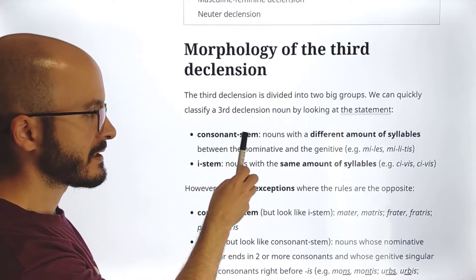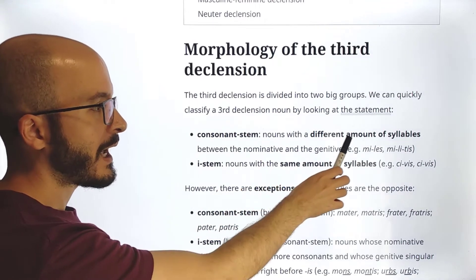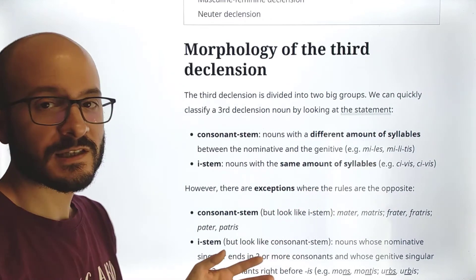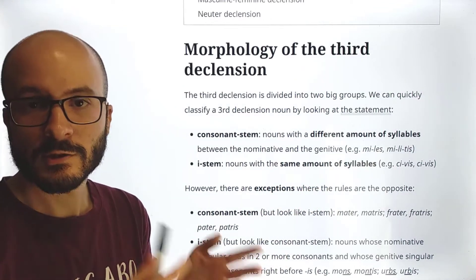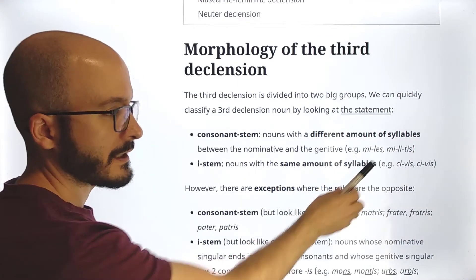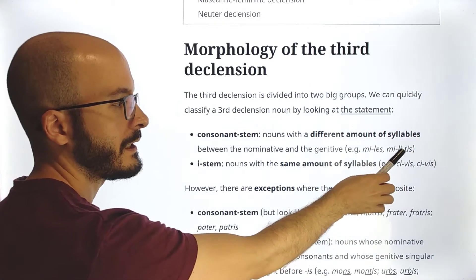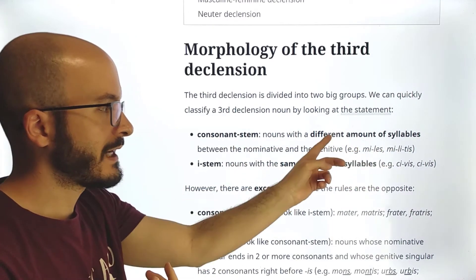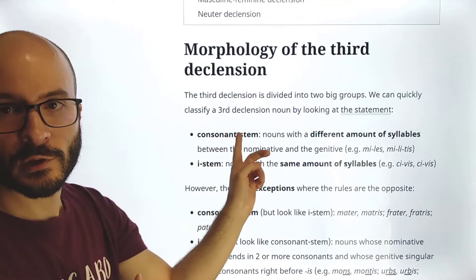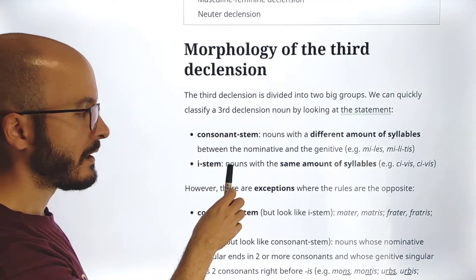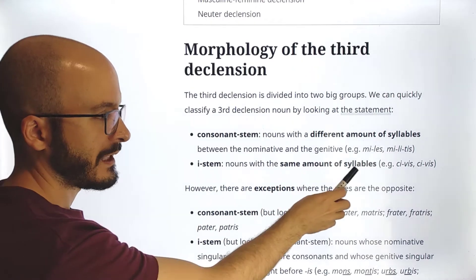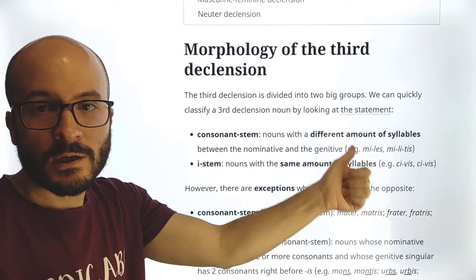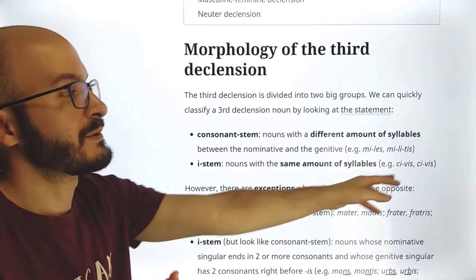Consonant stem nouns have a different number of syllables between the nominative and the genitive. For example, 'miles' has two syllables, and 'militis' has three syllables — so there's a different amount, and this noun belongs to the consonant stem. E-stem nouns have the same number of syllables. For example, 'civis, civis' — both have two syllables. So this belongs to the e-stem.